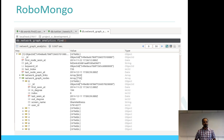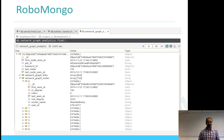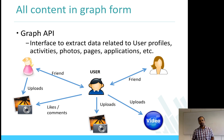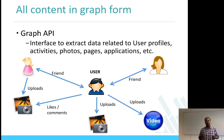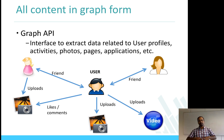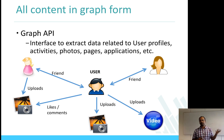Robo Mongo shows you what different fields are available and what data is stored in those fields. All content on Facebook is stored in a graph format — the user, friends, pictures uploaded, videos uploaded, and status updates are all nodes in the graph. Every interaction — comments, likes, and things like that — becomes the edges in this graph. Facebook stores all interactions and all data in graph format, which is why the API they have is also called the Graph API.